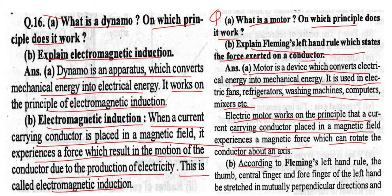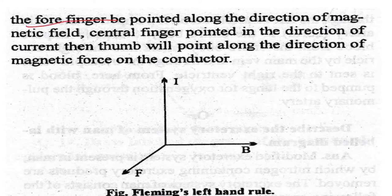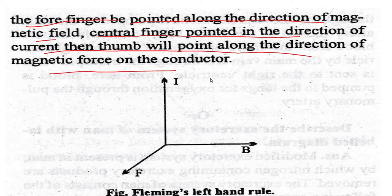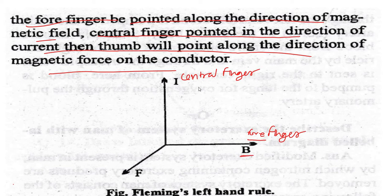Fleming's left-hand rule: if the thumb, index finger, and middle finger of the left hand are stretched in mutually perpendicular directions, and the index finger points along the direction of the magnetic field and the middle finger points in the direction of current, then the thumb will point in the direction of the magnetic force on the conductor.